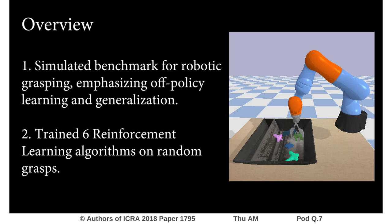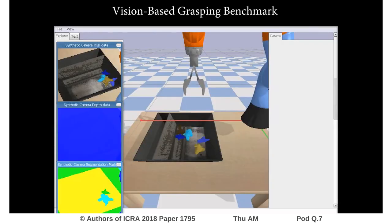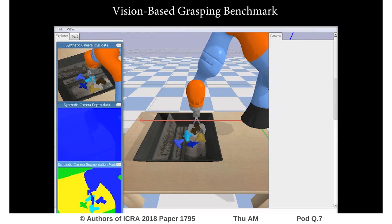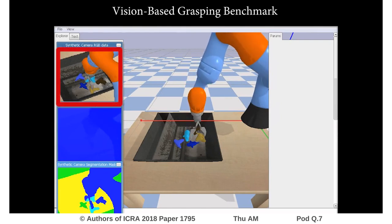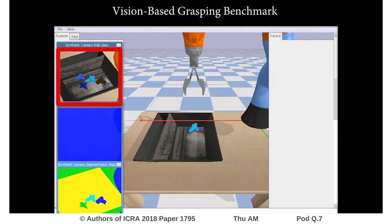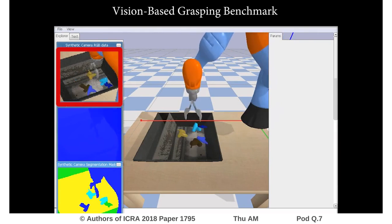In this video, we present a simulated benchmark for robotic grasping and evaluate six off-policy reinforcement learning algorithms on it. Our open-source grasping benchmark consists of two tasks, both of which use only RGB pixels to control a robotic arm to grasp objects in a bin.